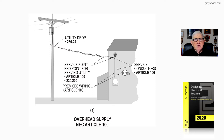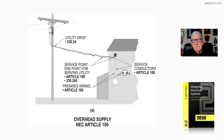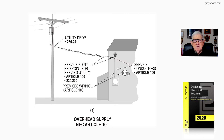Notice in the illustration the transformer on the pole. We have a utility drop in accordance with 230.24 over to the weather head that is installed there at the building. At the weather head, we make connections to the conductors fed through the weather head, and that's the service point going down to the meter and into the service panel of this facility.